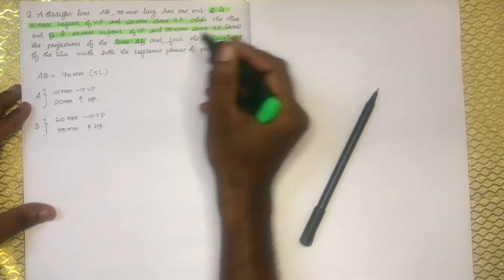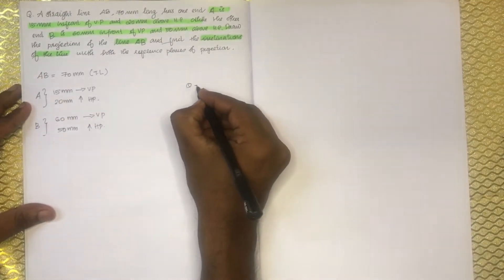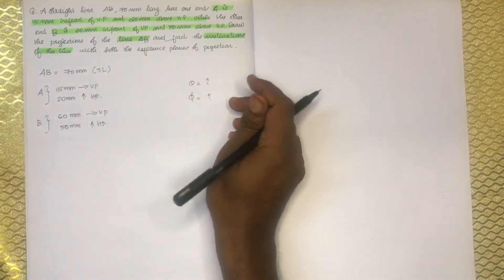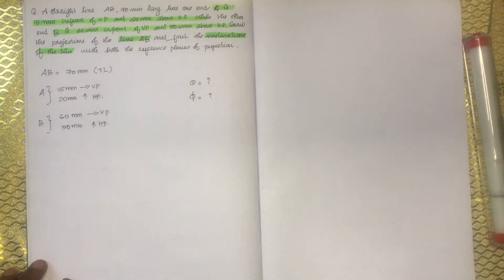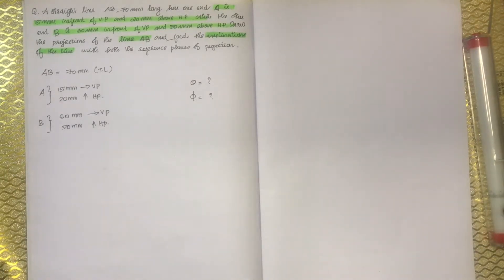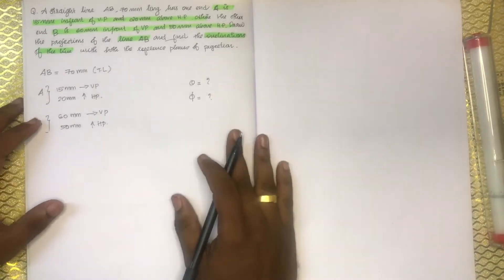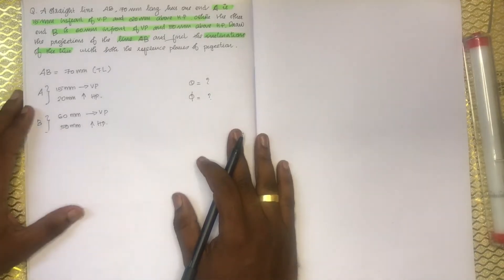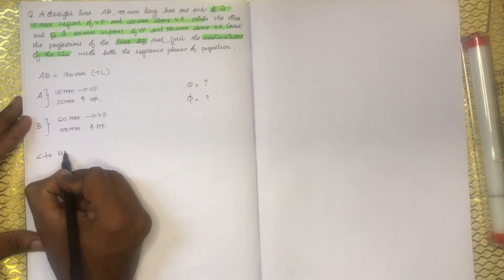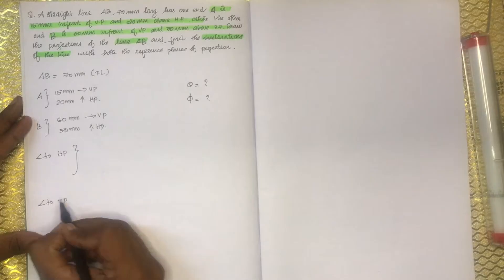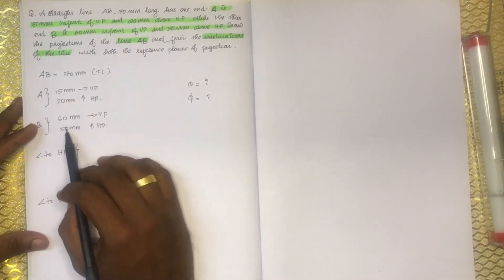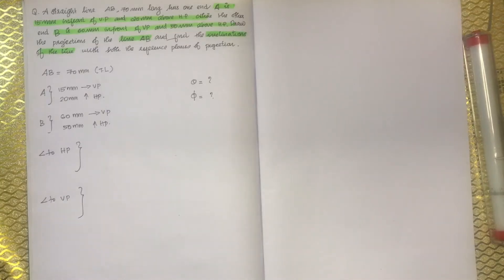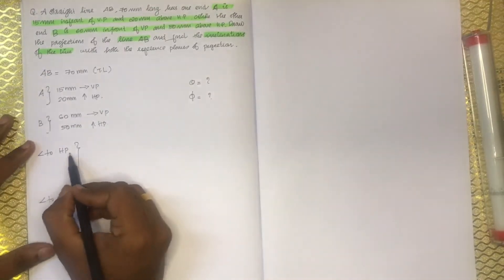The inclination of the line — the answer is theta, the inclination of the line with HP, and phi, the inclination of the line with VP. How many answers do you expect? These two answers will be given. The line is inclined to both HP and VP, so A is at distances 15 and 20, and B is at 60 and 50.